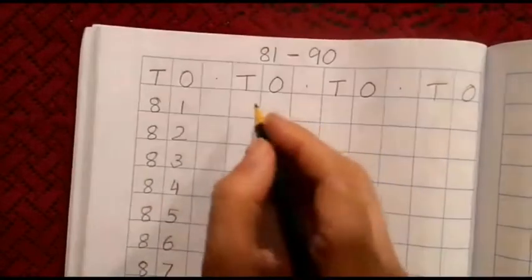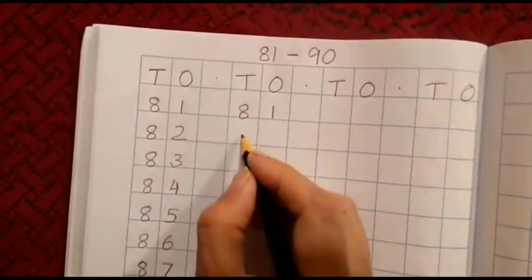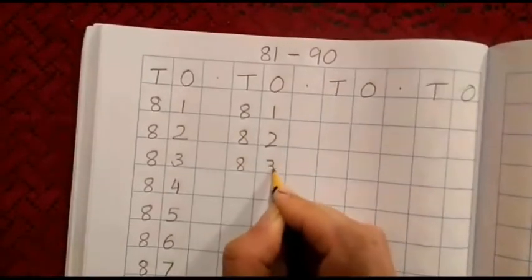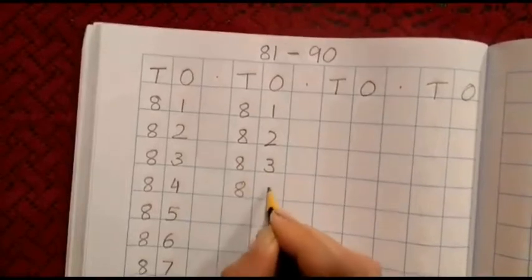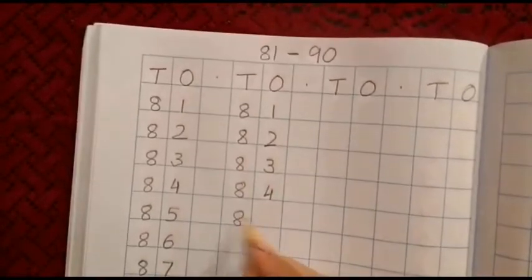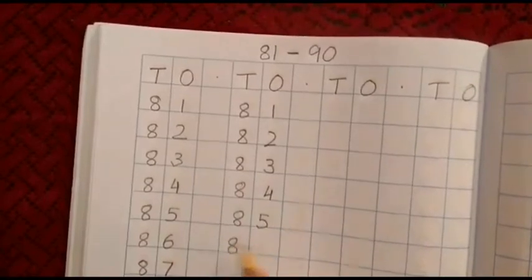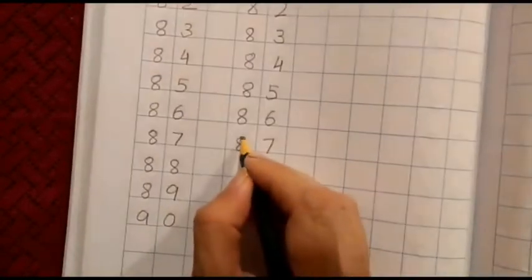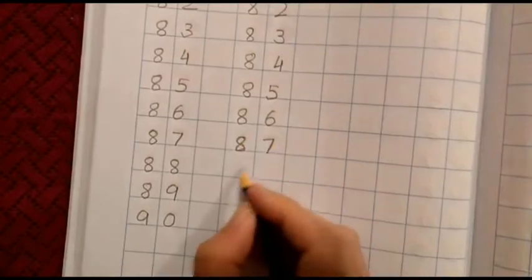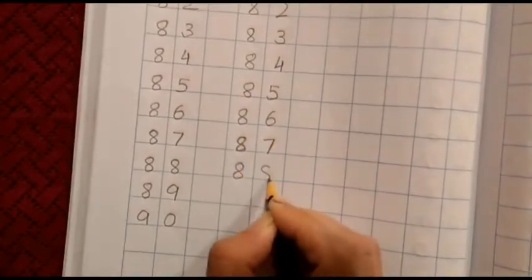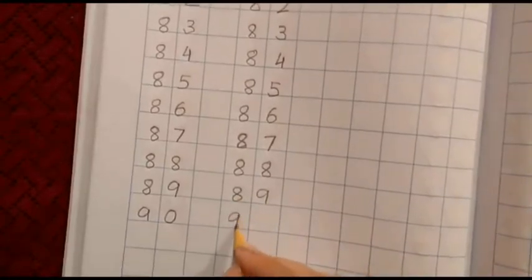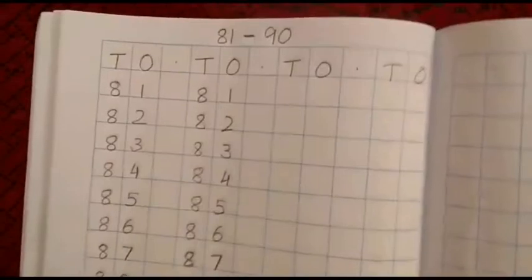Again, we will write it here. 8, 1, 81, 8, 2, 82, 8, 3, 83, 8, 4, 84, 8, 5, 85, 8, 6, 86, 8, 7, 87, 8, 8, 88, 8, 9, 89, 9, 0, 90.